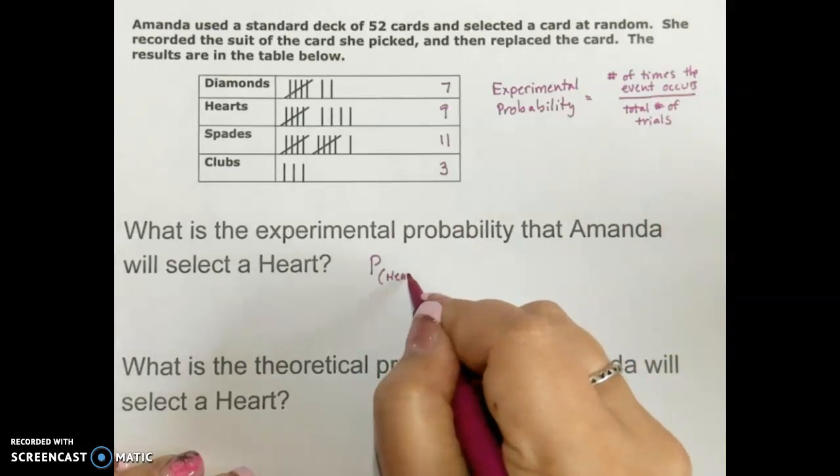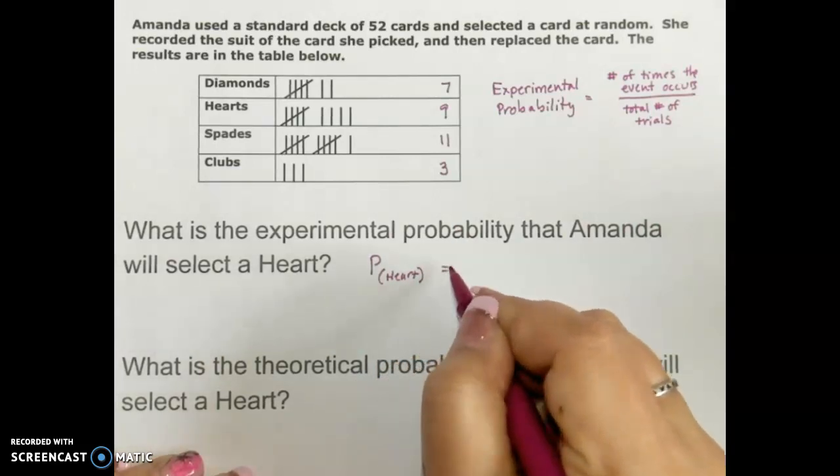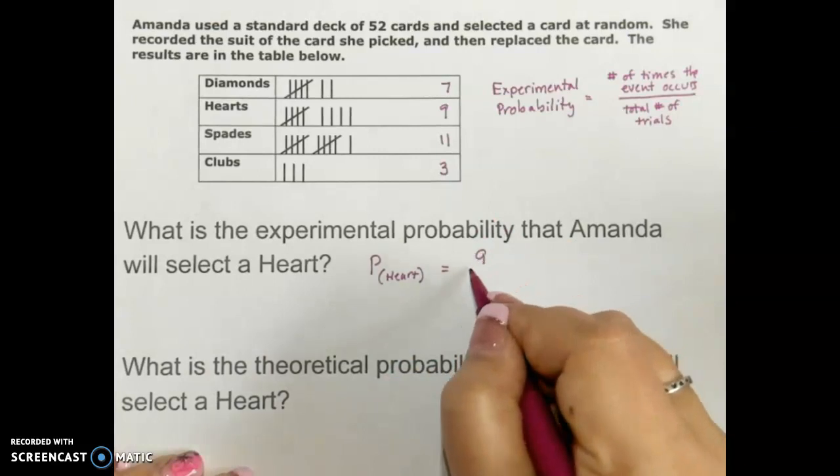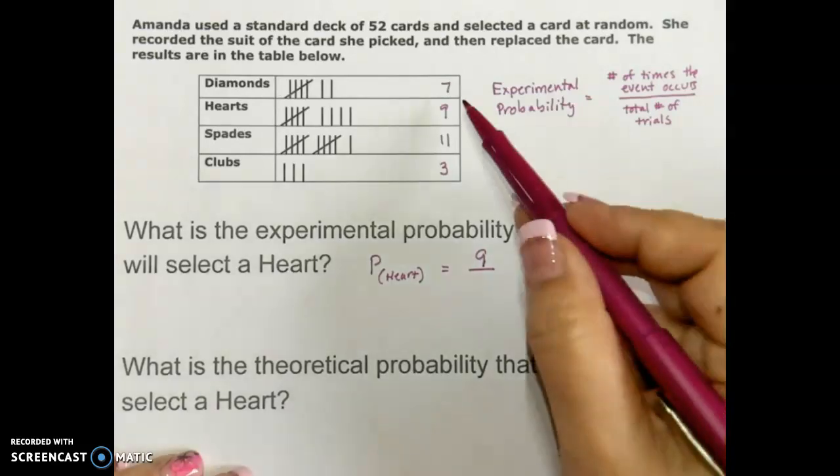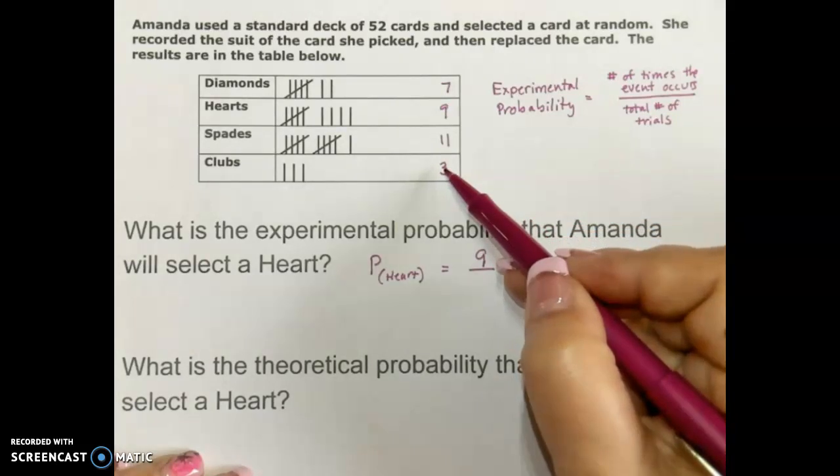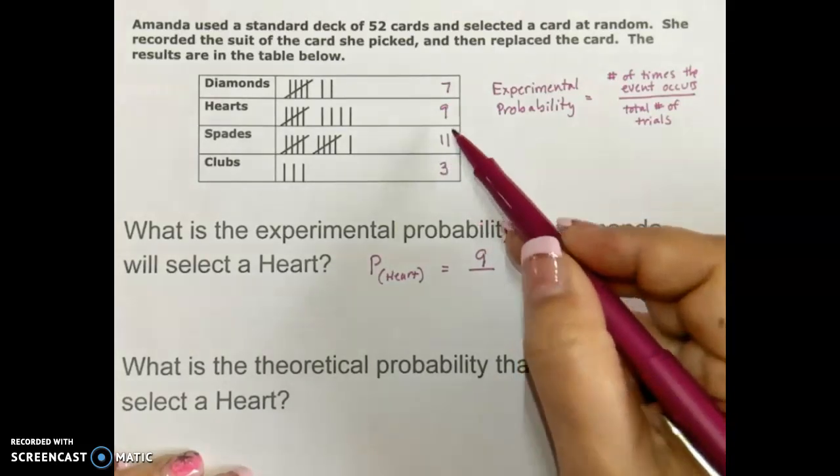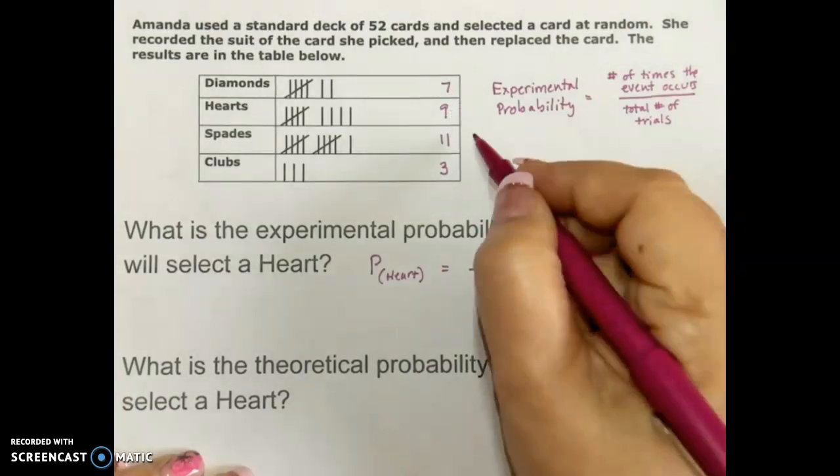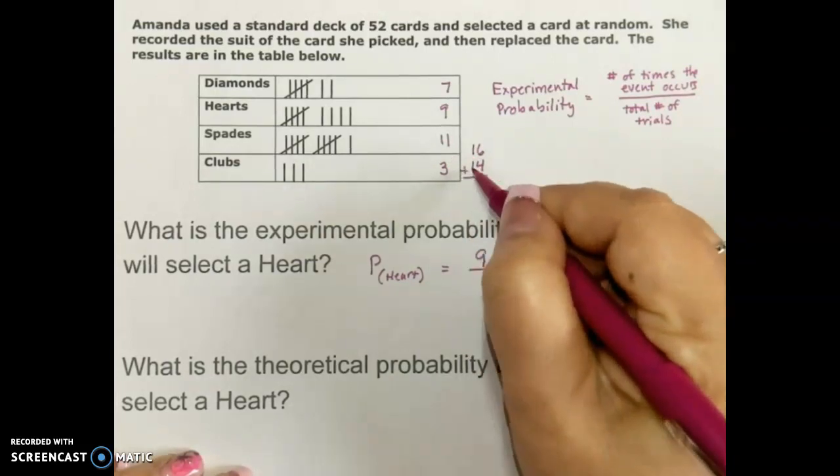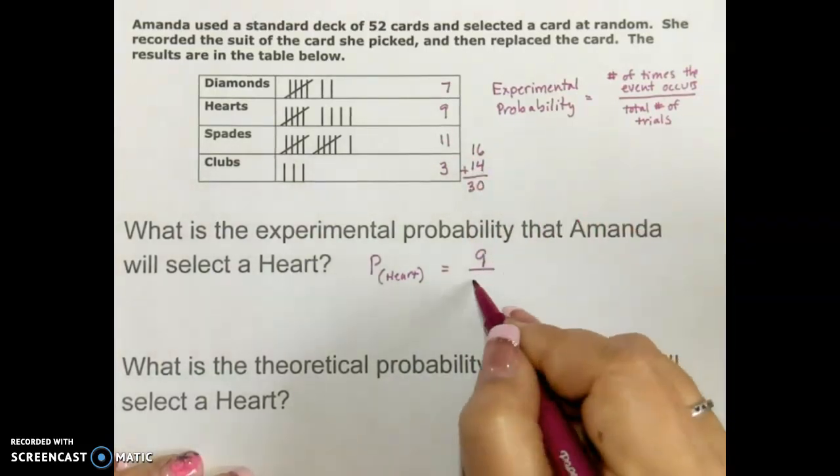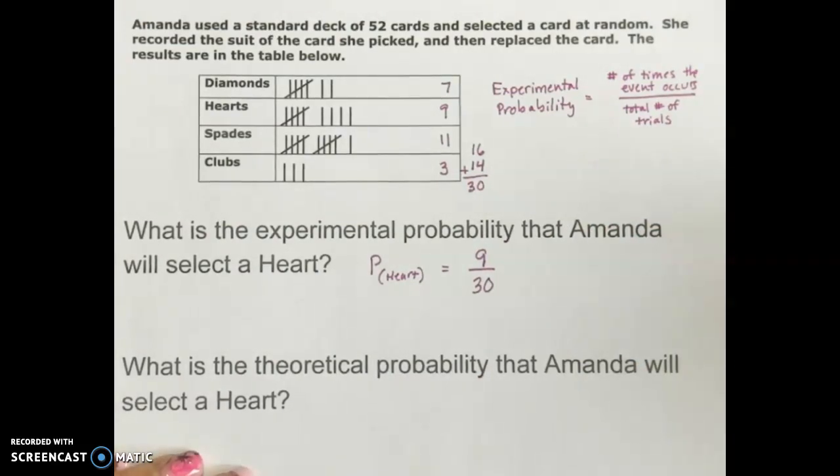So probability of selecting a heart occurred nine times in Amanda's trials out of the total number of trials altogether. Now they didn't tell us in the problem how many trials she did, but we can figure that out by adding together all of the things that happened. So seven plus nine is 16 and 11 plus three is 14 and 16 plus 14 is 30, which means that Amanda did 30 trials altogether.